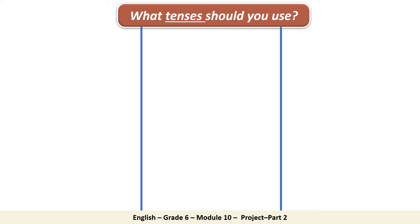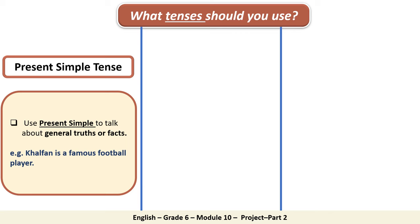Let's answer another question: what tenses should you use when writing a biography? Super! You should use the present simple tense, the past simple tense, and the present perfect tense.